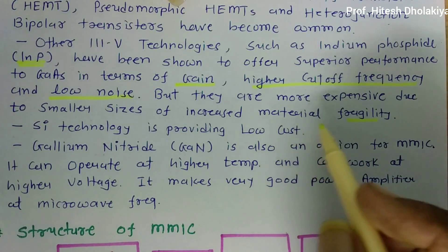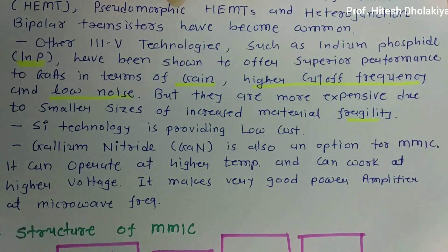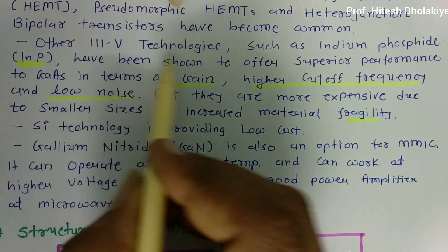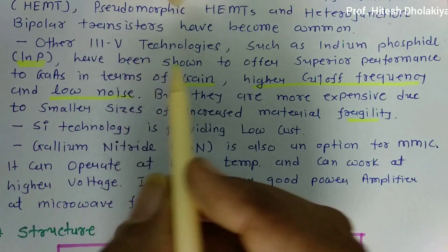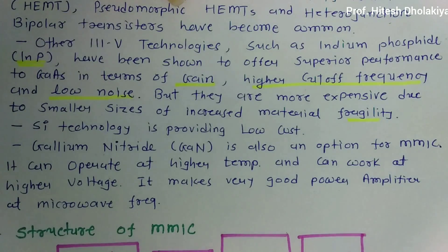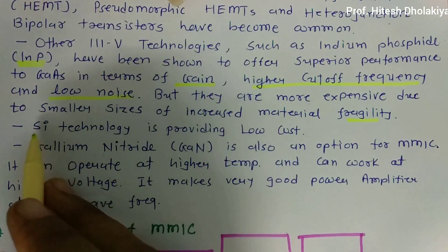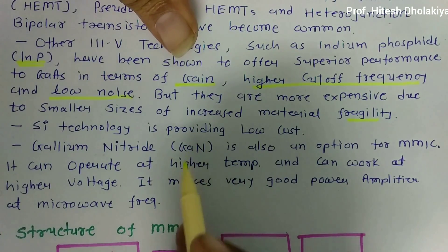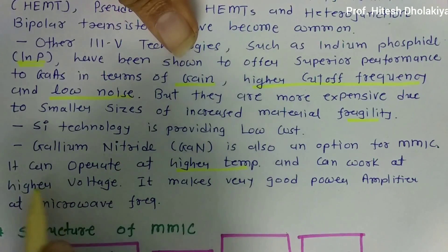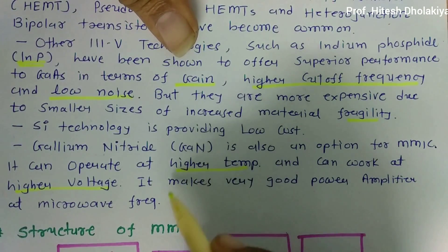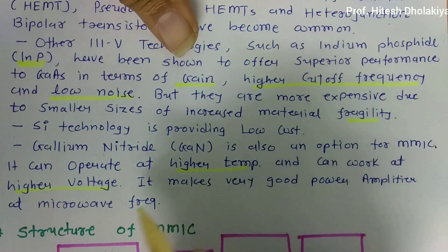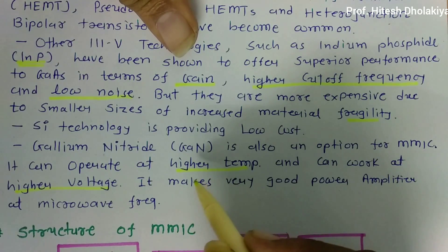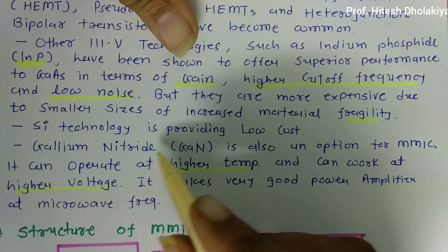III-V technologies are therefore suited to high-cost applications. For low-cost applications, silicon and gallium arsenide technologies are generally utilized. In gallium nitride technology, it provides higher temperature operation and can work at high voltage, making it a very good power amplifier at microwave frequencies. So for high temperature and high voltage applications, gallium nitride can be utilized in MMIC.